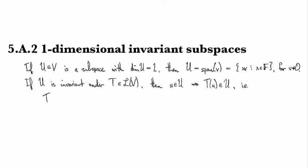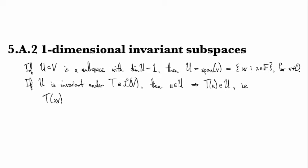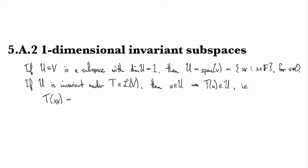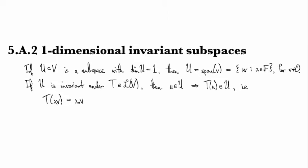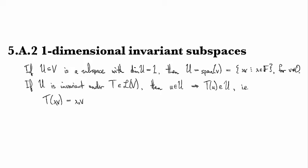So we've got u has to look like lambda_1 v. And then we also know that T(u) is going to look like lambda_2 v, since we're mapping the set back into itself.